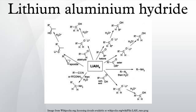LAH crystallizes in the monoclinic space group P21/c. The unit cell has the dimensions: a = 4.82, b = 7.81, and c = 7.92 Å, with α = β = 90° and γ = 112°. In the structure, Li+ centers are surrounded by 5 AlH4 tetrahedra. The Li+ centers are bonded to one hydrogen atom from each of the surrounding tetrahedra, creating a bipyramid arrangement.